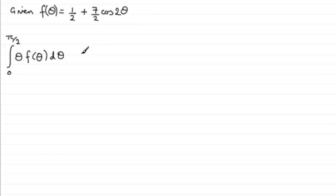So first of all what I'm going to want to do is obviously substitute this in for f of theta. So if we do that we're going to get that this is equal to the integral from 0 to pi upon 2 of theta times f of theta. Now what I'm going to do is multiply the theta with these two terms. So what we're going to get is theta over 2 when we do theta times the half and then plus 7 theta over 2 multiplied by cos 2 theta. And all of this, as put in brackets, is integrated with respect to theta.